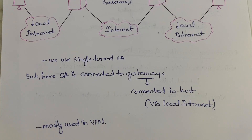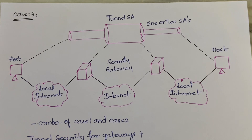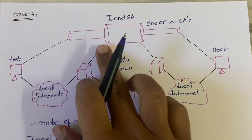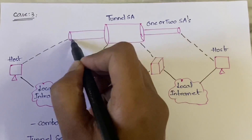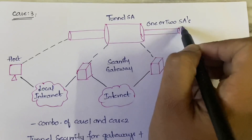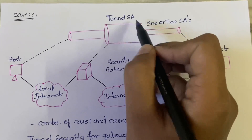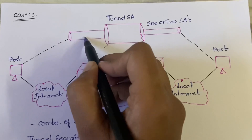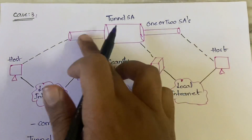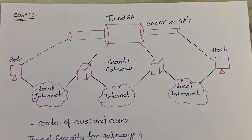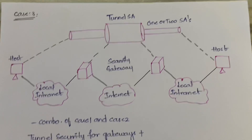Case three is a combination of both case one and case two. In case one, simple security associations provided security to the end host. In case two, the tunnel security association provided security to the security gateways. Here in case three, the thin channel represents the normal security associations and the thicker channel represents the tunnel security association. So the simple security associations provide security to the host, and the tunnel provides security to the security gateway — double security.